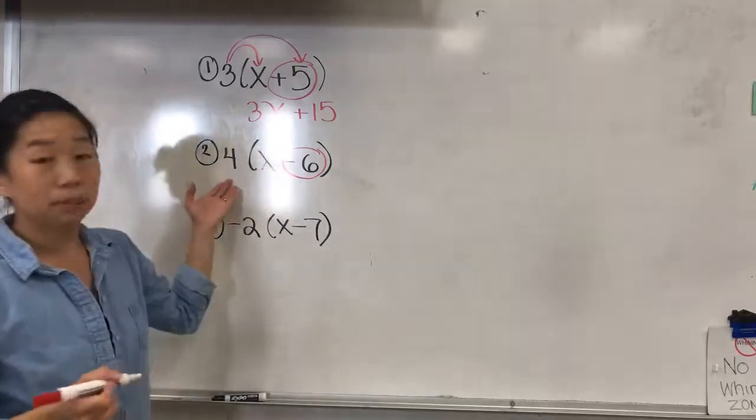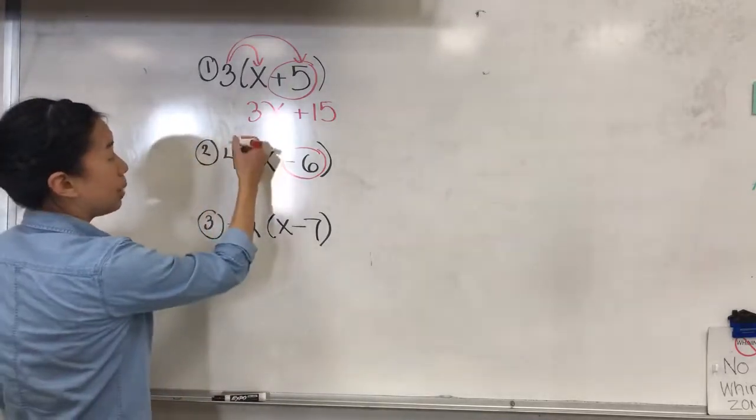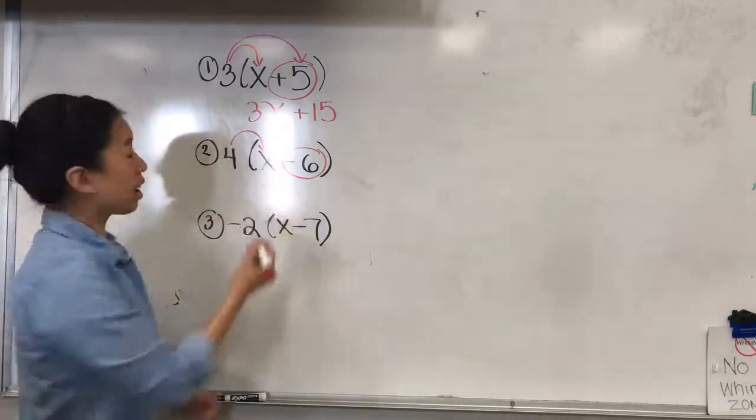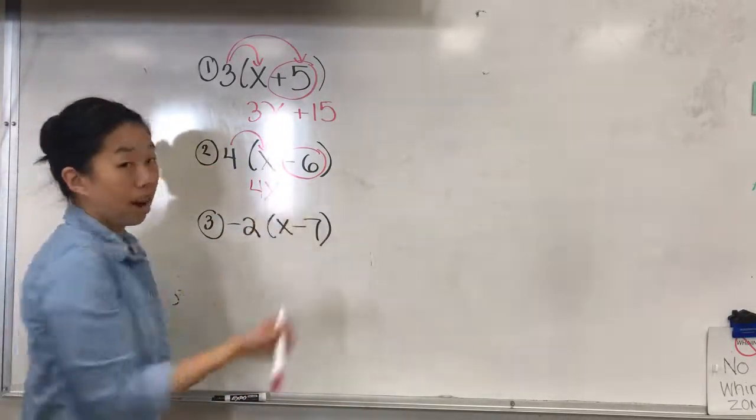If you look at example 2, we have a 4 and I'm going to rainbow or distribute or multiply to the first term. So 4 times x which is going to give me 4x.